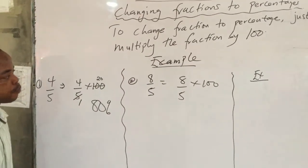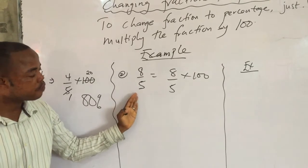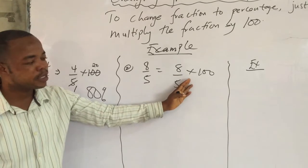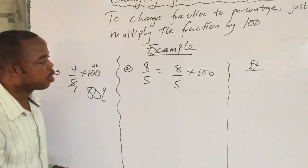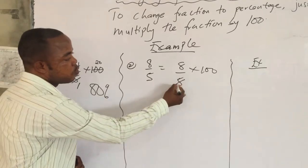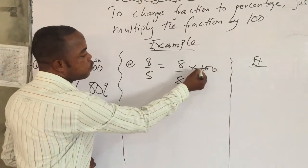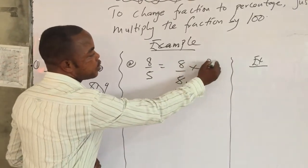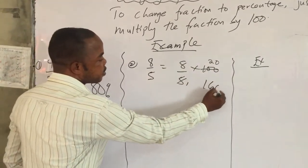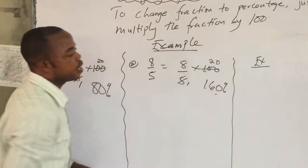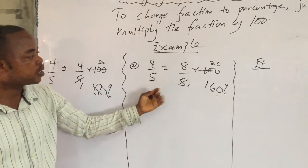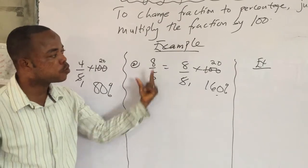Good. Let's go to the next example. I have 8 over 5, which I want to change it to what? Percentage. So I have 8 over 5 multiplying 100. As usual, you can also cancel it. 5 goes here 1. Then 5 goes into 100, 20. Then we just multiply it. 8 times 20 gives us 160 percent. That means we have changed from a fraction to percentage.